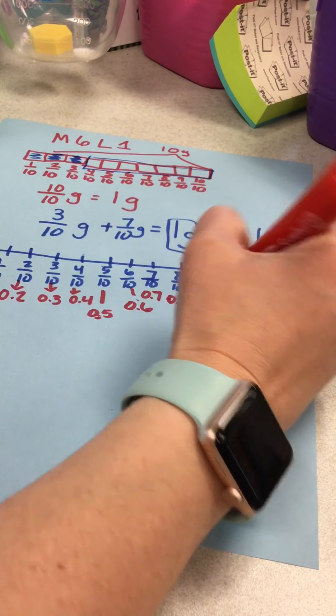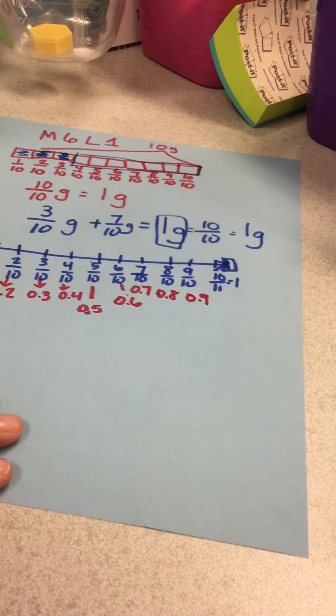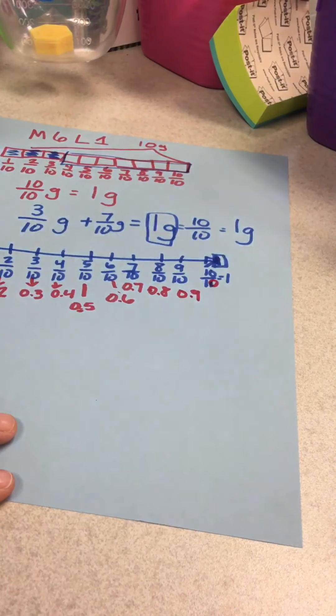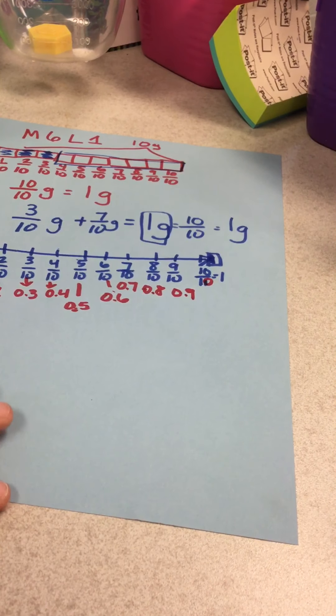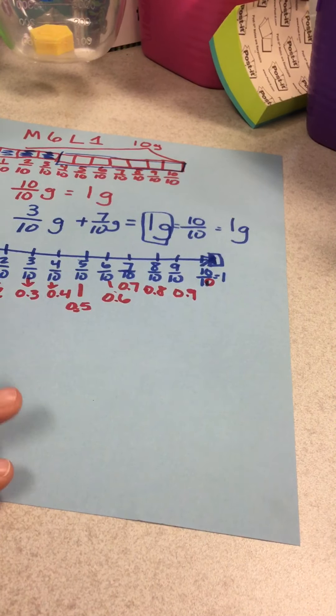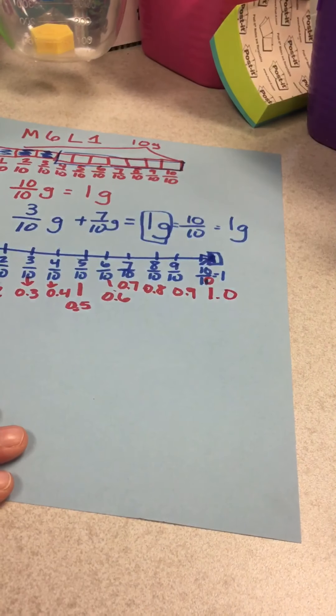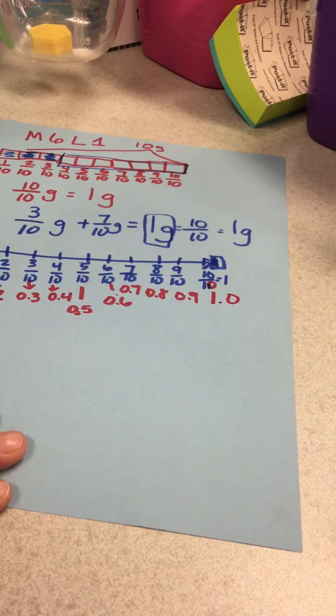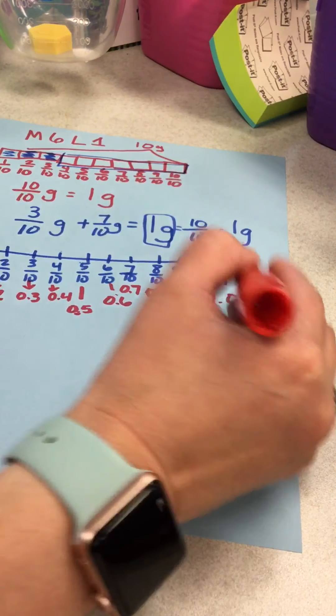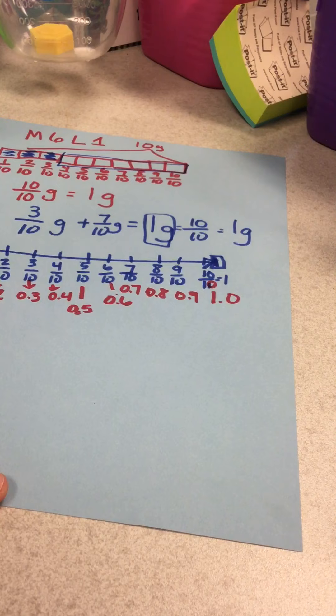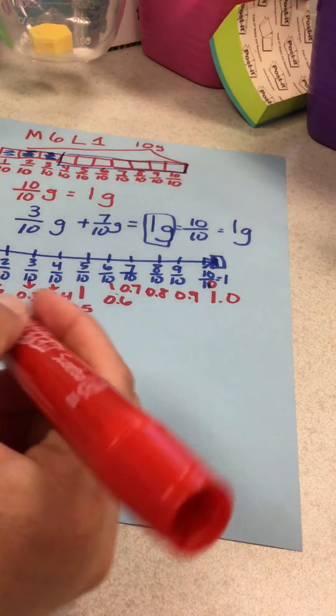Now this one gets tricky. What is ten tenths? Well, I already know that it equals a whole, so I'm going to write it as one point zero, because one whole is just one point zero if I just put a decimal in there, because I don't have anything left over. So that's how you would put those into fractions.